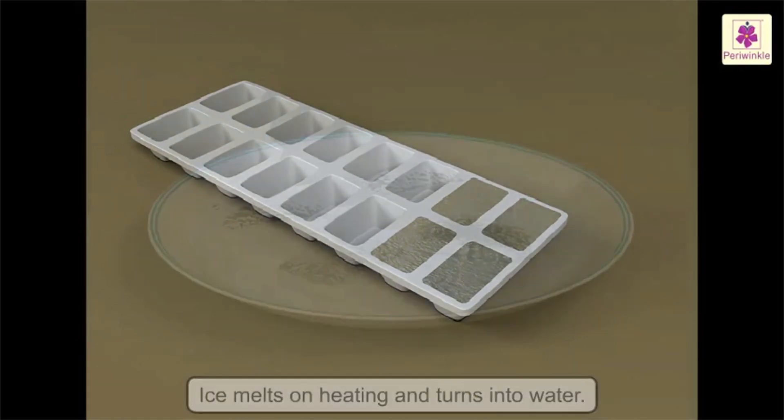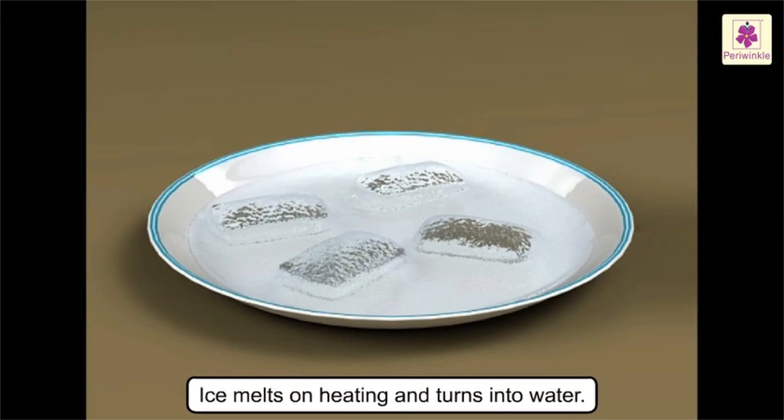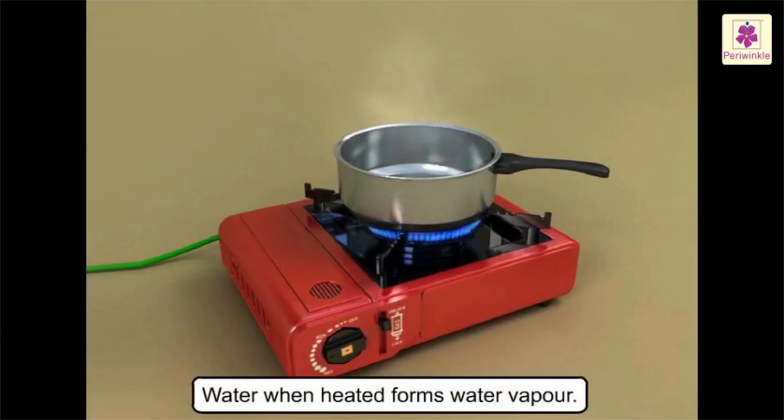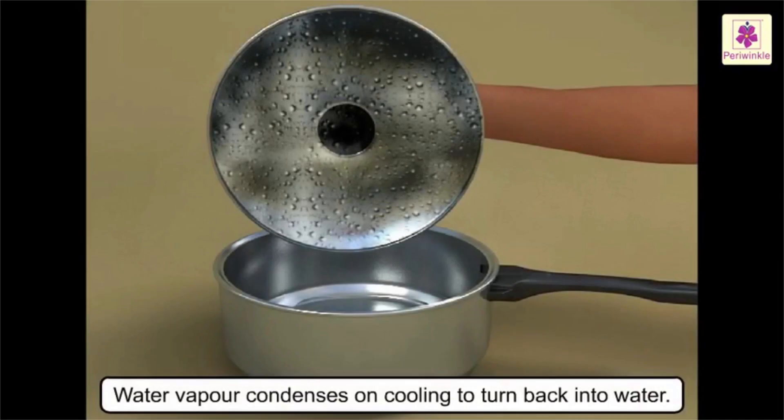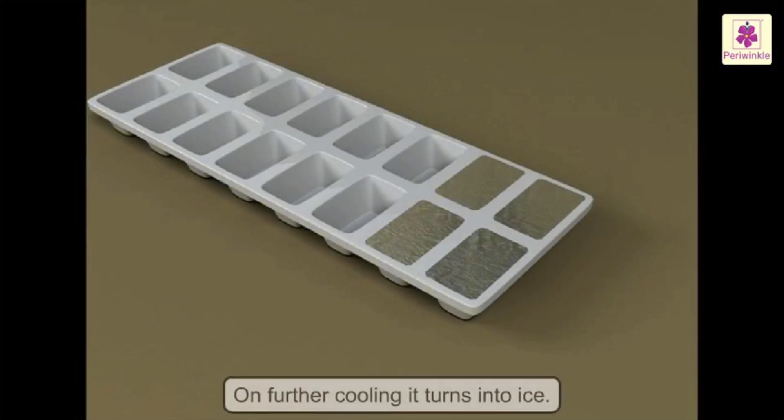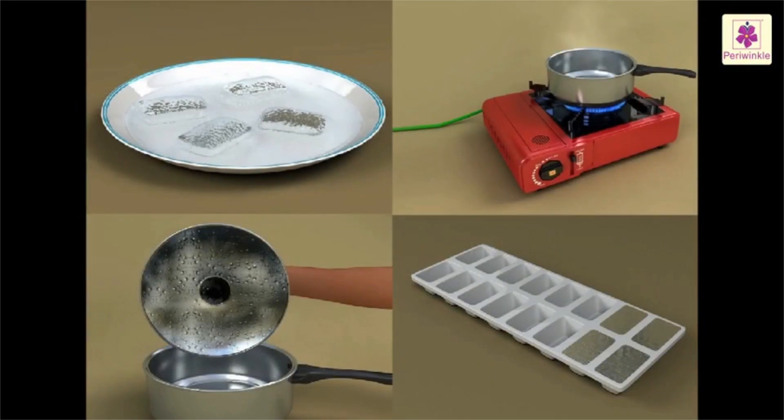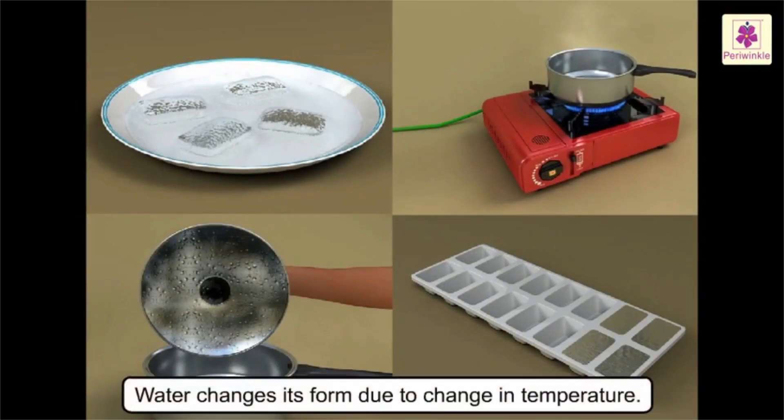So what did we observe? Ice melts on heating and turns into water. Water when heated forms water vapor. Water vapor condenses on cooling to turn back into water. When this water freezes on further cooling, it turns into ice. Thus we now know that water changes its form due to change in temperature.